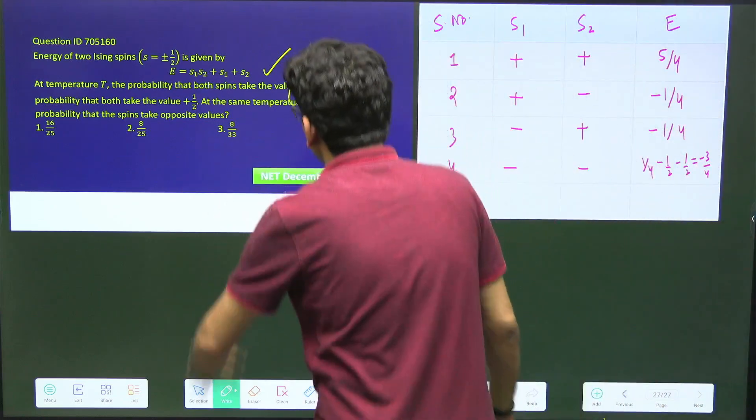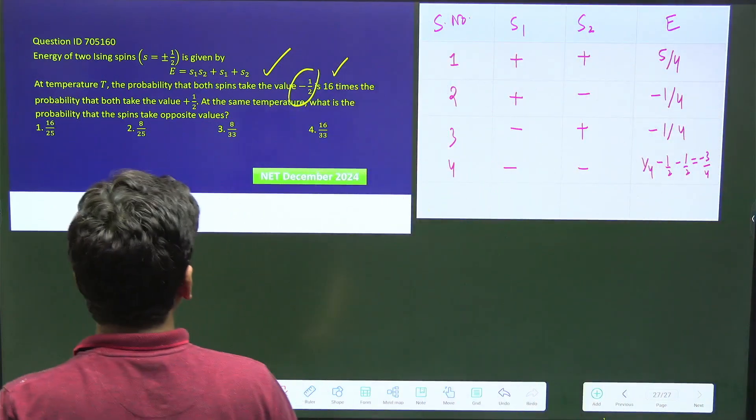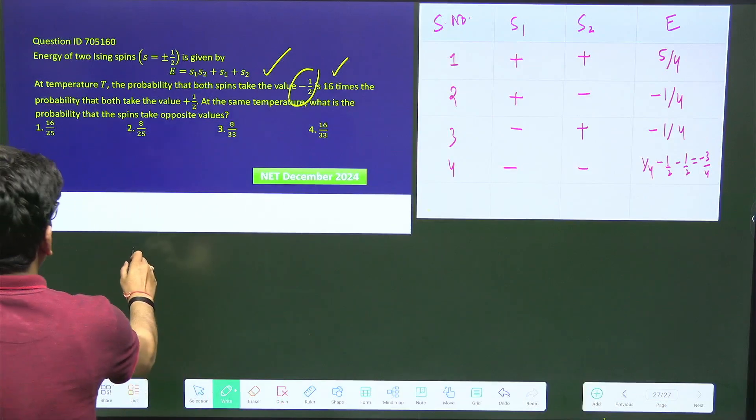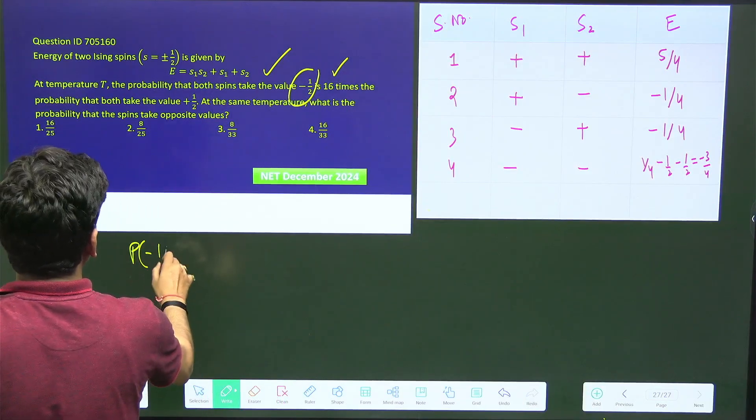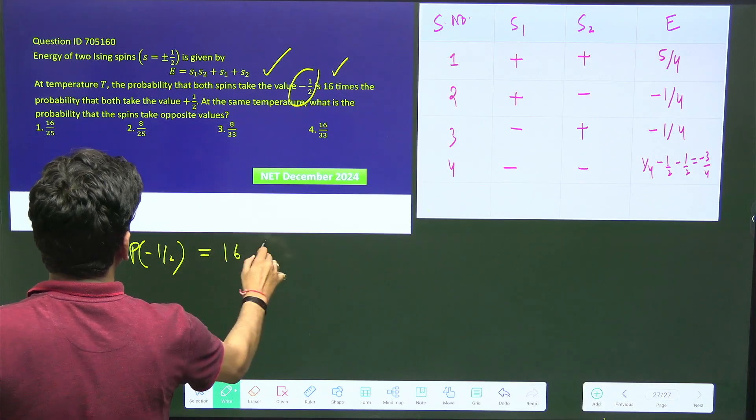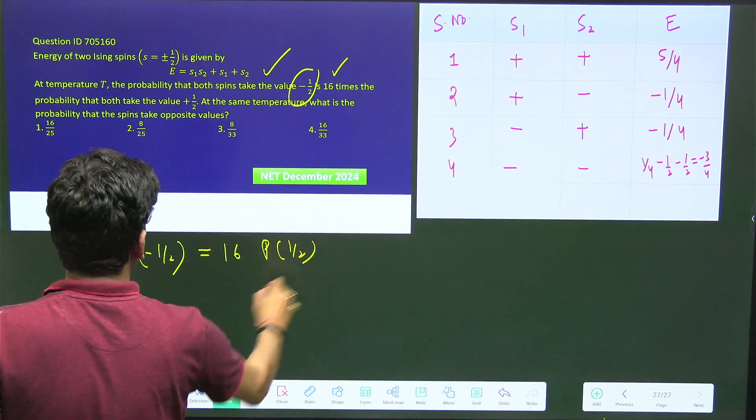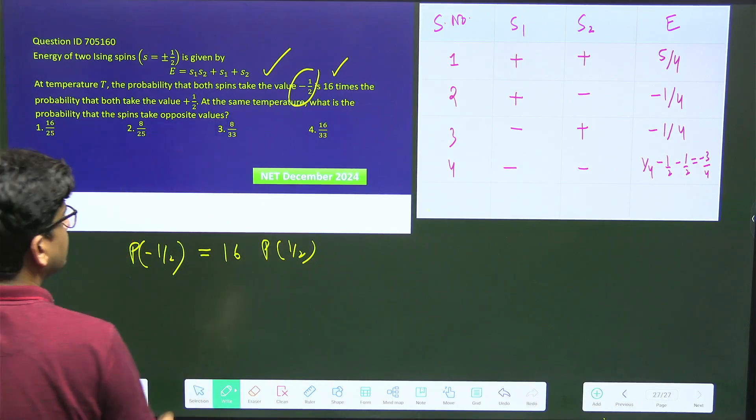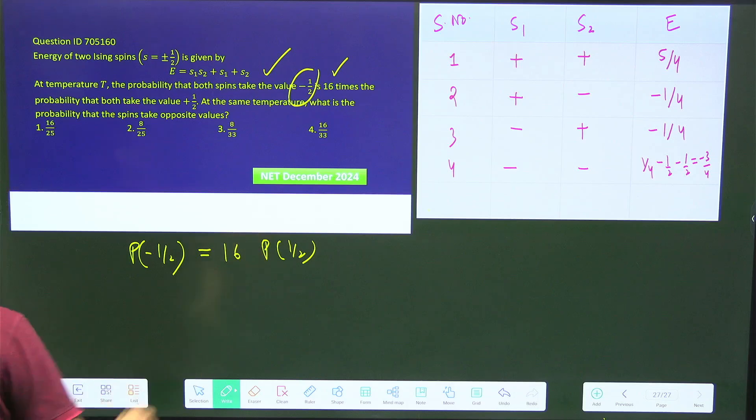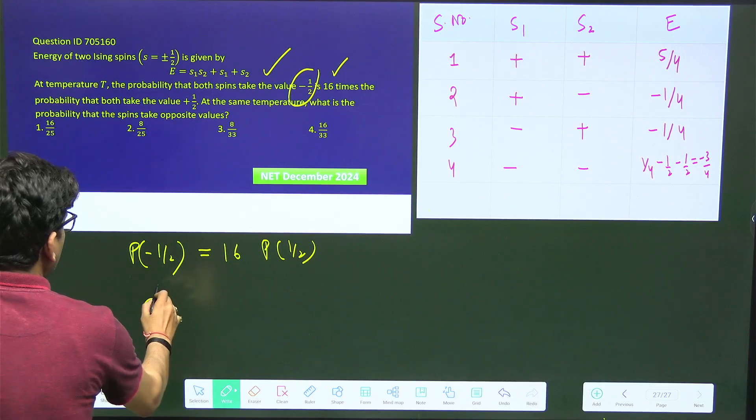Two Ising spins - how many ways can they be arranged? I have taken s1 s2: plus plus, minus minus, plus minus, minus plus, and these are the energy values according to the Hamiltonian given. You can see there is a degeneracy when it is plus minus or minus plus.